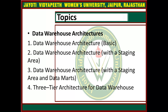These are the topics which I have covered in this lecture. First is Data Warehouse Architecture — it is a basic architecture. Second is Data Warehouse Architecture with a staging area. Third is Data Warehouse Architecture with a staging area and data marts. Fourth is three-tier architecture of data warehouses. These are basically the four types of data warehouse architectures.